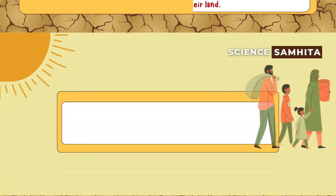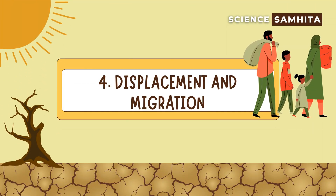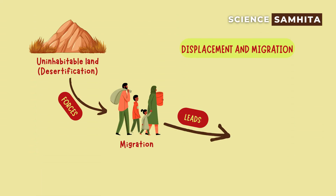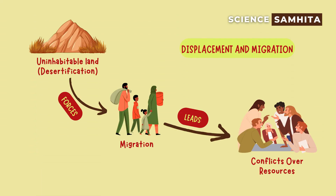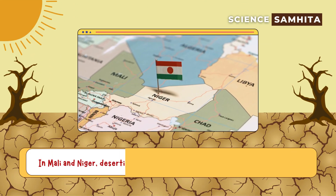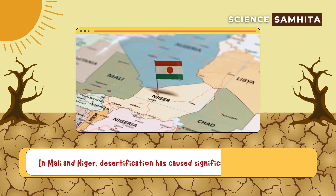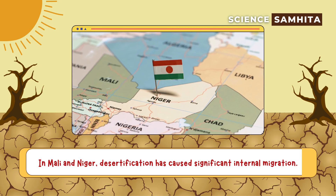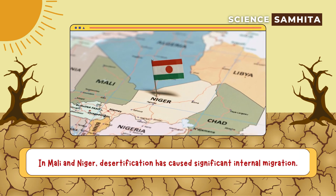Fourth, displacement and migration. Uninhabitable land forces communities to migrate, often leading to resource conflicts. For example, in Mali and Niger, desertification has caused significant internal migration.